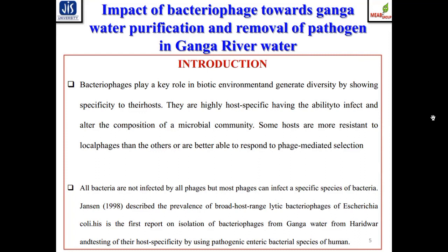Bacteriophages are species specific. Not all bacteriophages have compatibility with a broad spectrum of bacteria; instead, they have very local selectivity. They have a tail region containing a binding protein by which they can attach to the permissive host bacteria. In their head region, the DNA and capsomeric proteins are compiled. DNA is injected by the phage into the host bacteria.